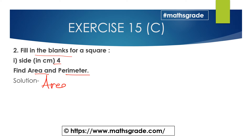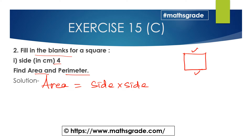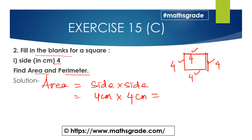We know the area of the square is side multiplied by side. In a square, all four sides are equal, and here each side is 4 centimeters. So area = 4 cm × 4 cm = 16 square centimeters. This is the area of the square.